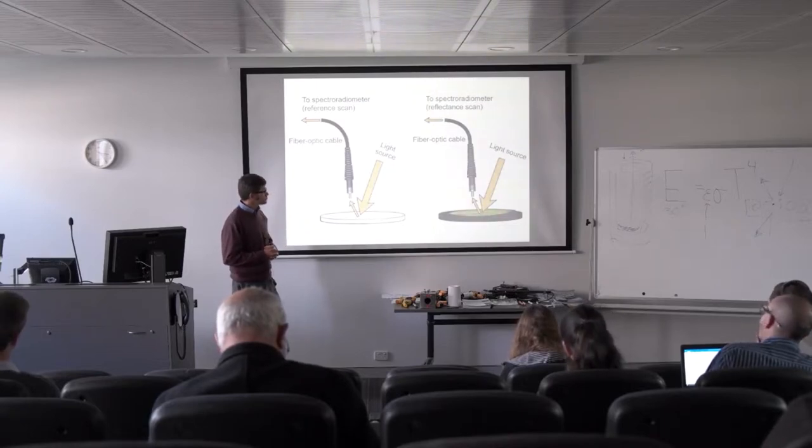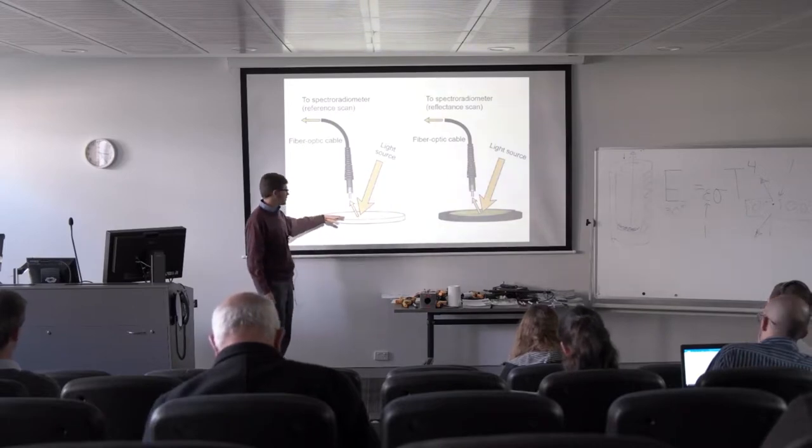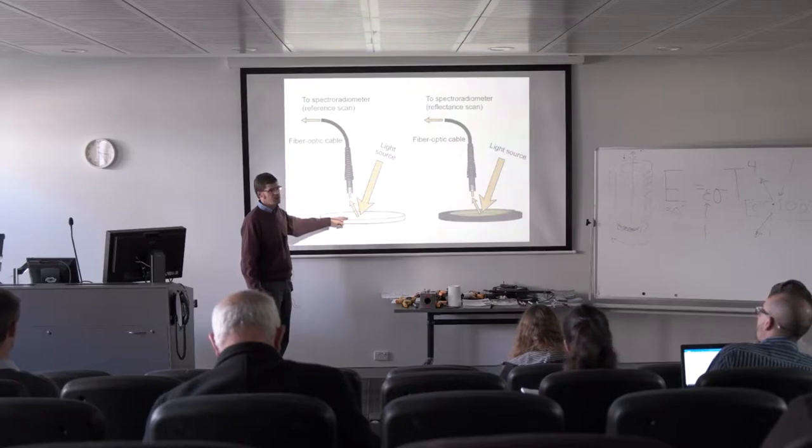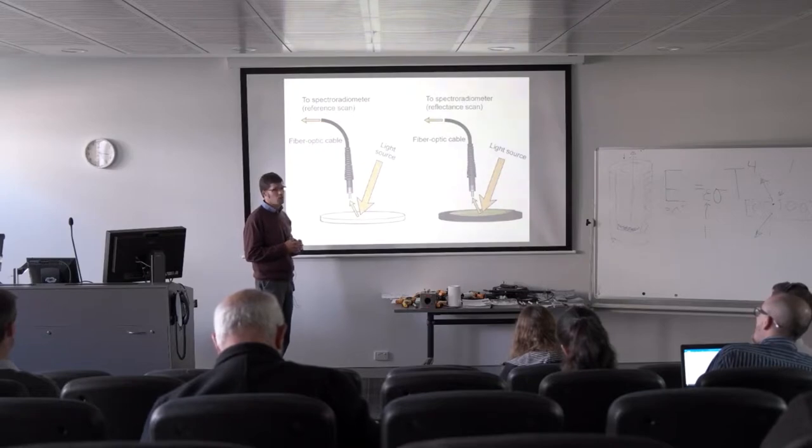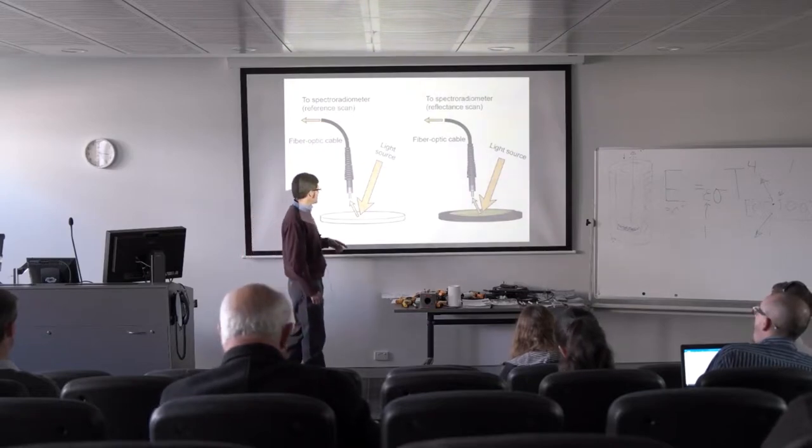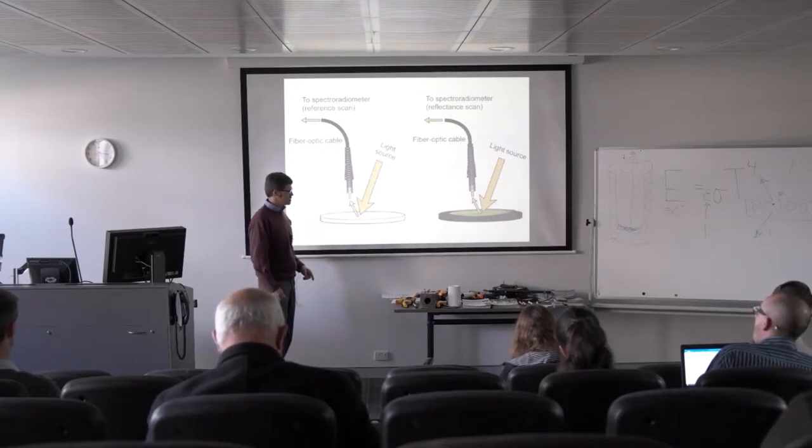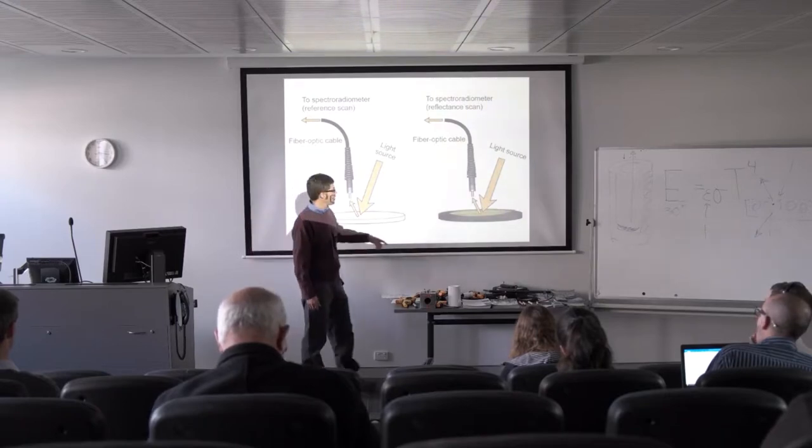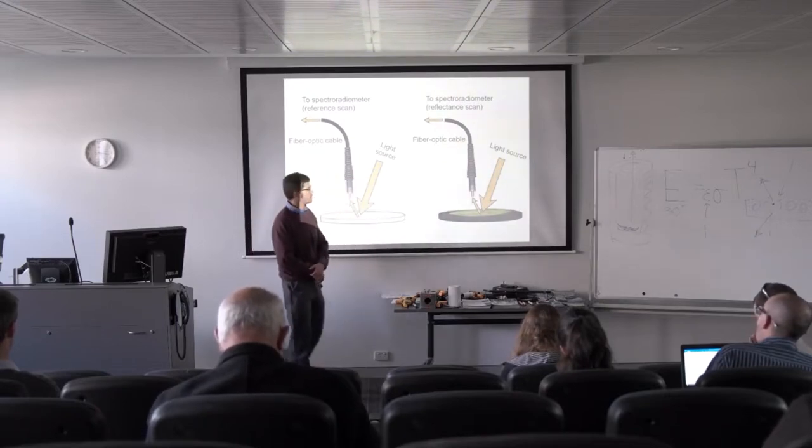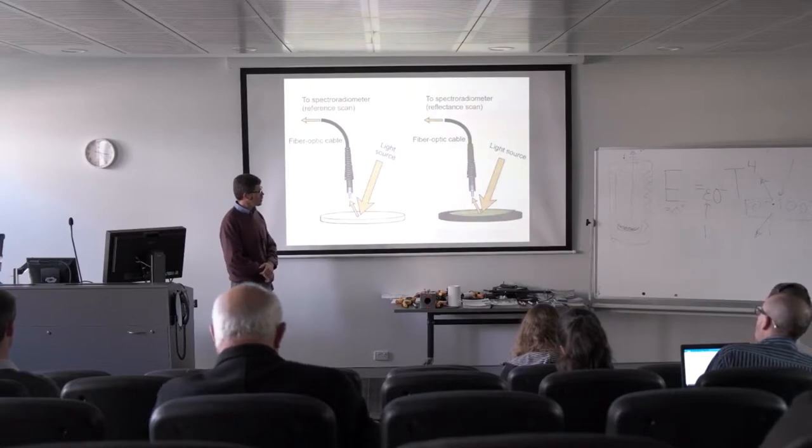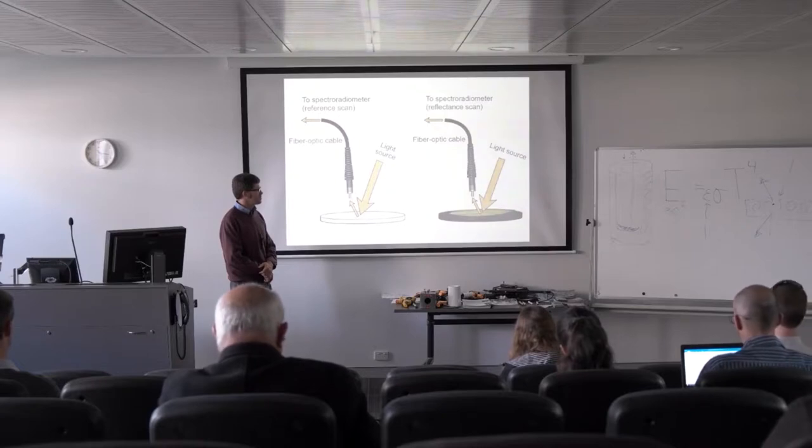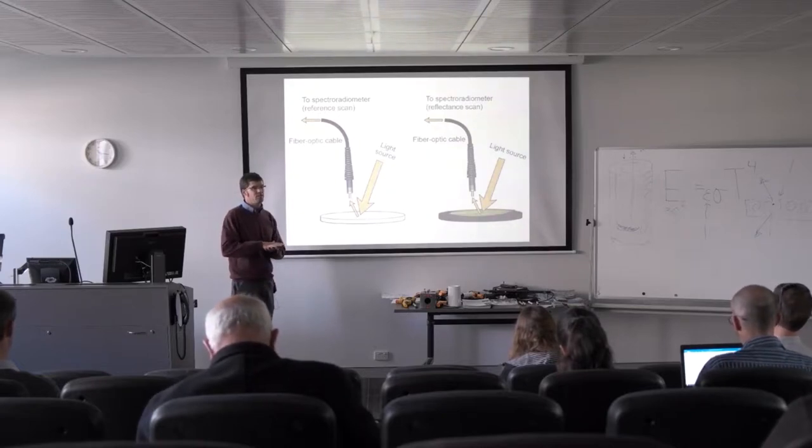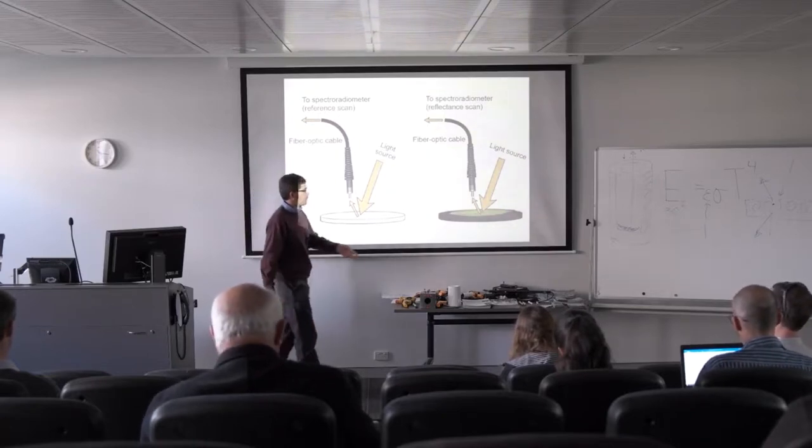After we make our measurement on a reflectance panel—often this is made out of spectralon or PTFE, some material that has really high reflectivity near 100%—once we get our reference measurement, the denominator of the reflectance equation, then we can put the sample under the light source and measure the reflectance from the sample. Notice we have to have some kind of flat black background behind the sample.